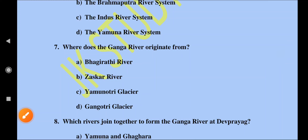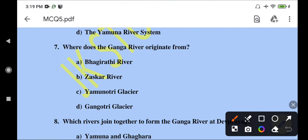Where does the Ganga River originate from? The Ganga River — also called the Ganges — originates from the Gangotri Glacier, which is located in Uttarakhand, specifically in the district of Uttarkashi. The Gangotri Glacier is present there, and the Ganga River originates from that glacier. So we can choose option D — Gangotri Glacier.